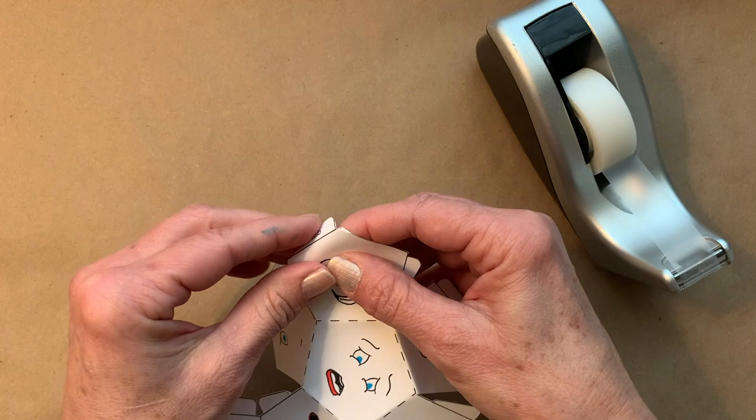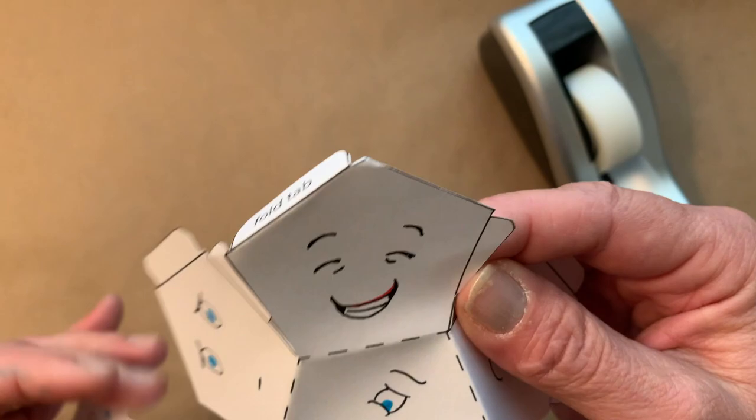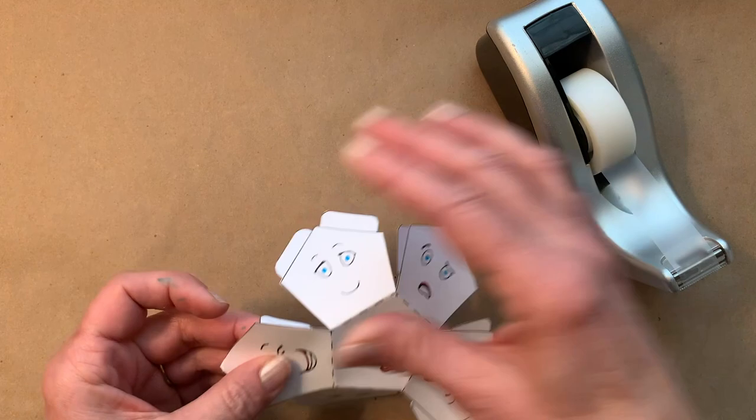And do the same thing for all the tabs. Don't just fold this one tab that says fold tab. Fold that one right on the line and all the other ones as well. See how it's right on the line there? Fold all the other ones too. Just fold them like that. Fold them all down, not up, away from the faces.